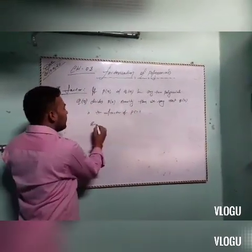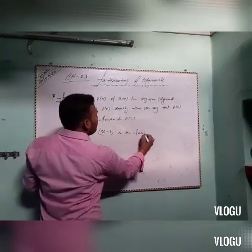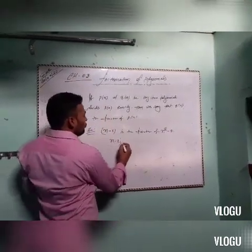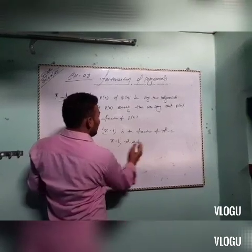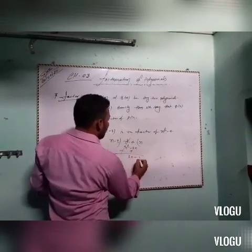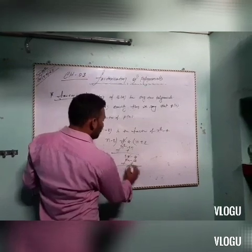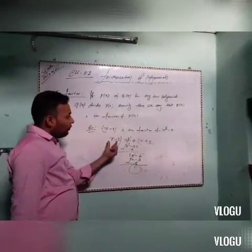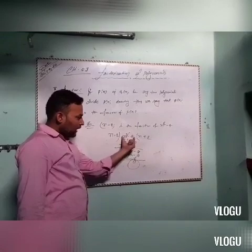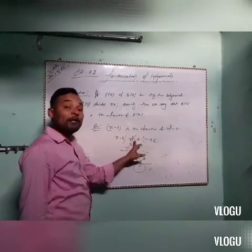Suppose an example: x minus 2 is the factor of x squared minus 4. x minus 2 divides x squared minus 4. Performing the division: x squared minus 2x, then plus 2x minus 4, and the remainder is 0. If x minus 2 divides x squared minus 4 and remainder is 0, then we say that x minus 2 is the factor of x squared minus 4.